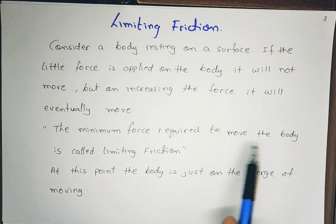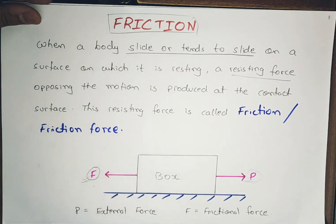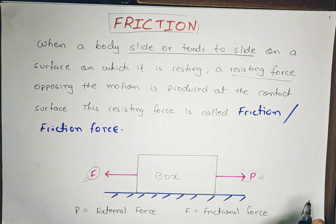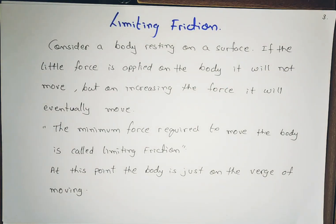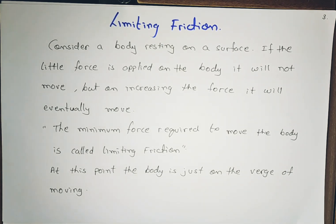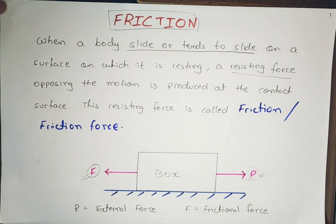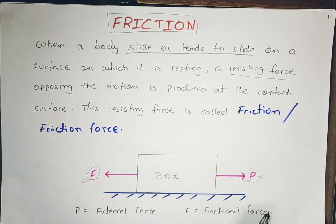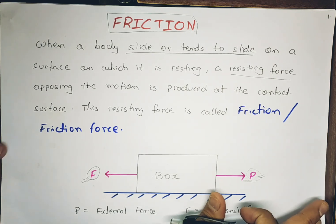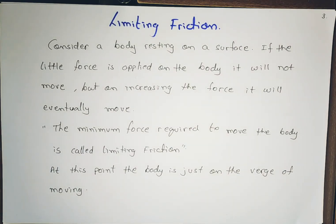The minimum force required to move the body is called limiting friction. The minimum force P we need to apply in order to get this box into motion is known as limiting friction. At this point the body is just on the verge of moving — it still hasn't moved. When the box is just on the verge of moving forward, its frictional force will be maximum.